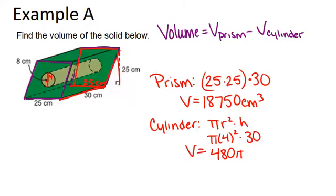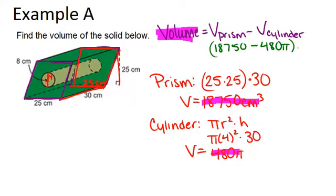Now, we just want to subtract these two values in order to figure out our total volume. So the total volume is 18,750 minus 480 pi, and all of that is centimeters cubed. So that will be our total volume.